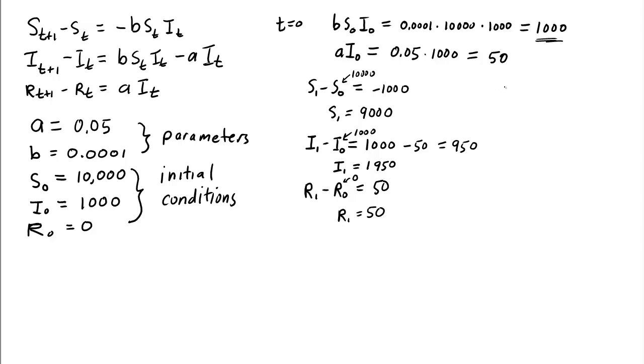After one time step, which is a day, remember, in this model, we have S1, which is 9,000 susceptibles. We have I1, which is 1,950 infectives, and we have R1, or 50, removed. So that's what happens after one time step.